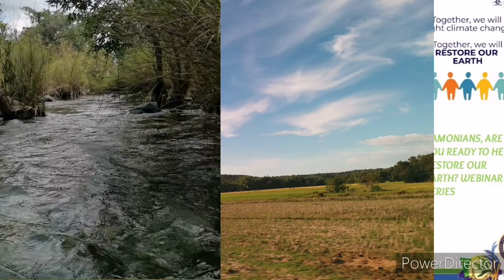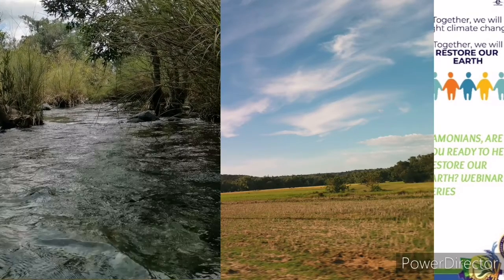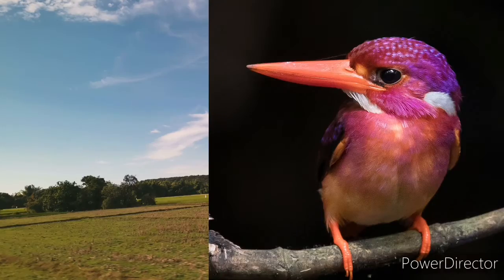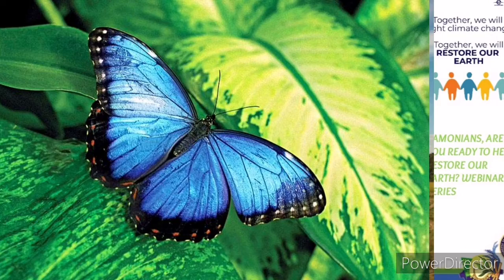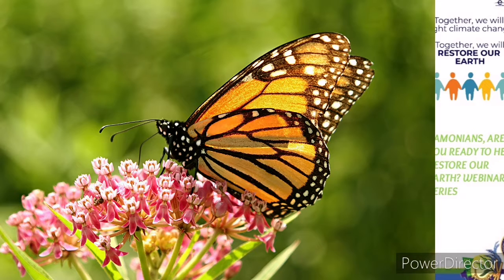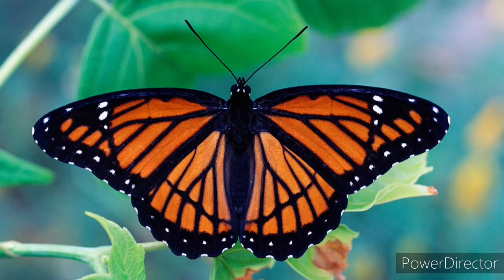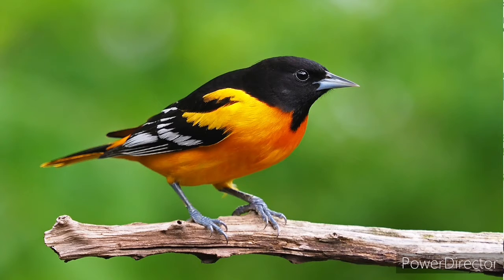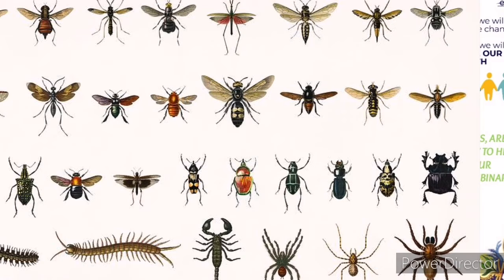After securing that the physical environment is fit to make the natural habitats thrive, it is then important to restore the biota of that specific ecosystem. If there is a need to reintroduce certain species of animals and plants, then it must be done in order to restore the original population, density, and diversity of the different life forms in that ecosystem.